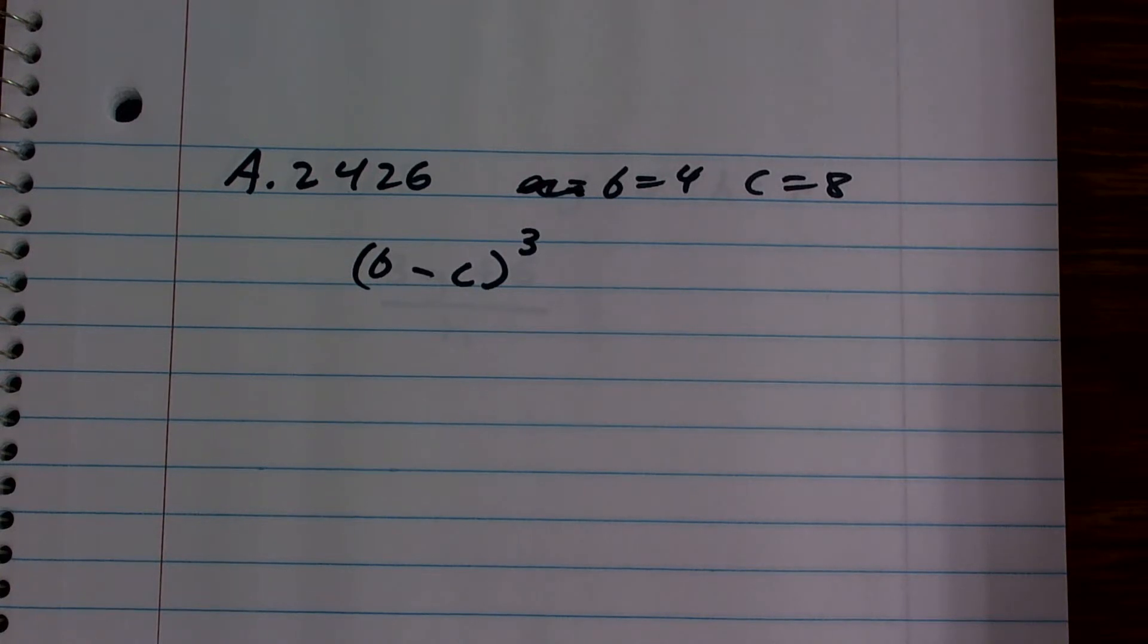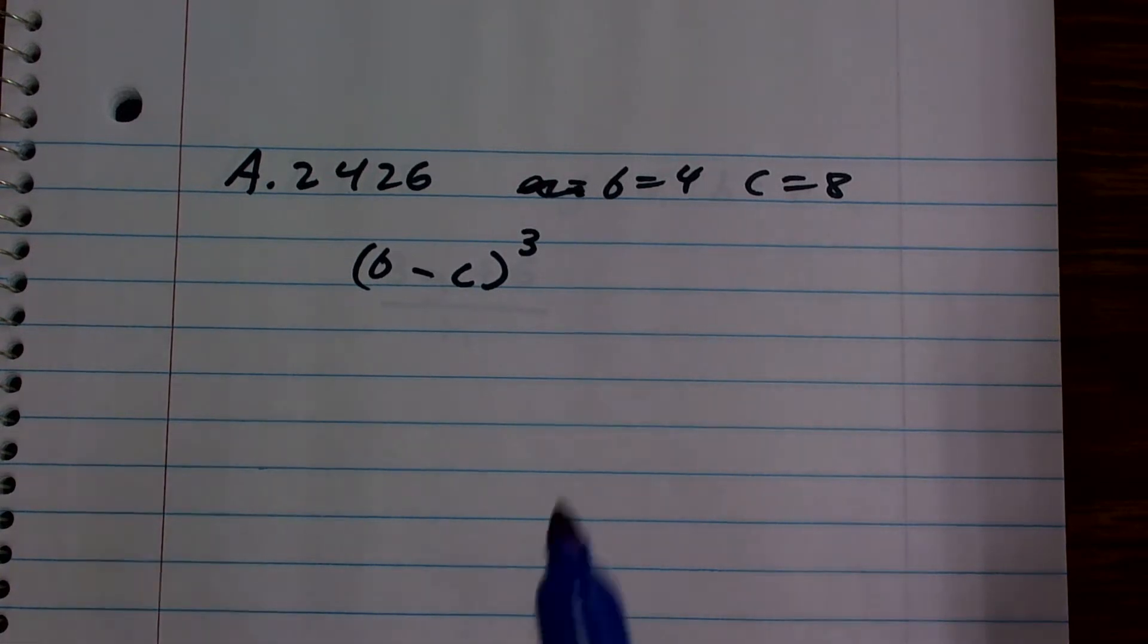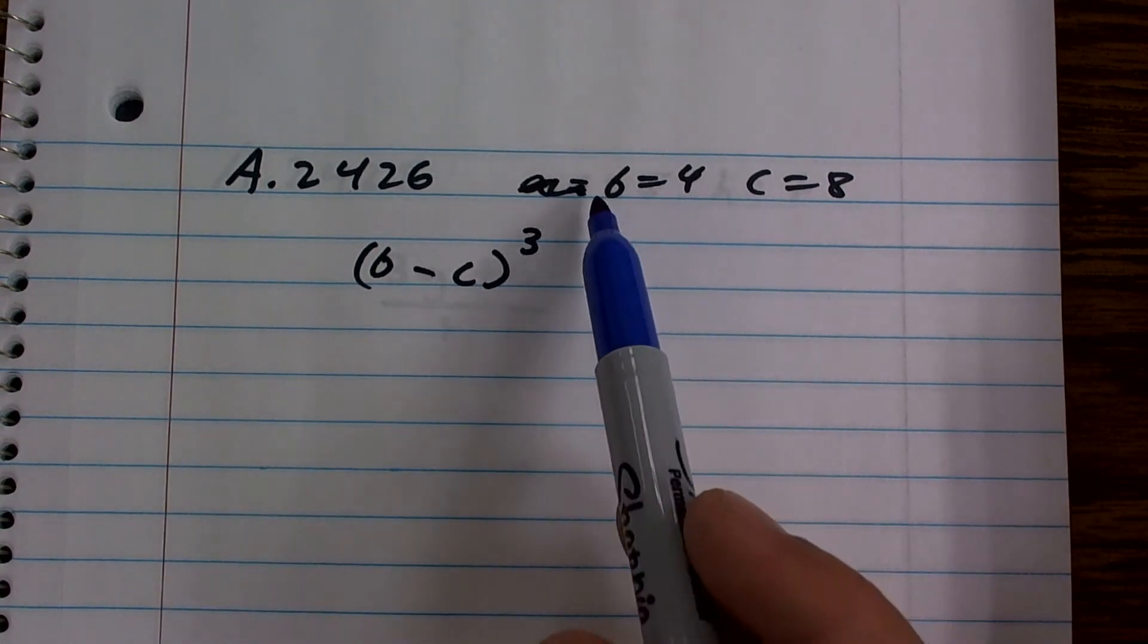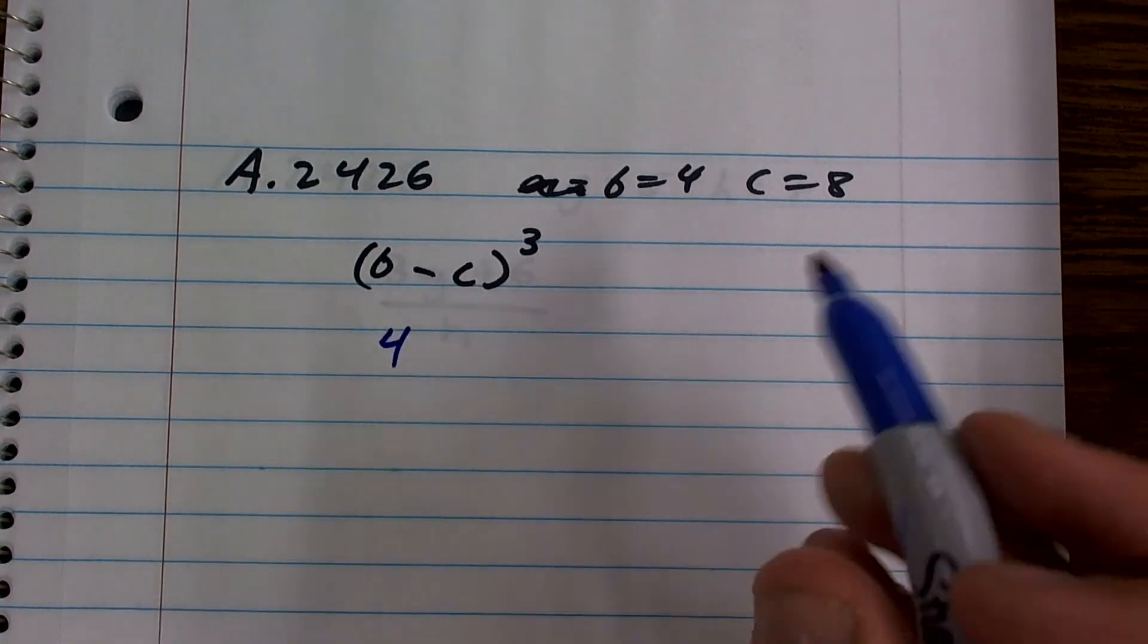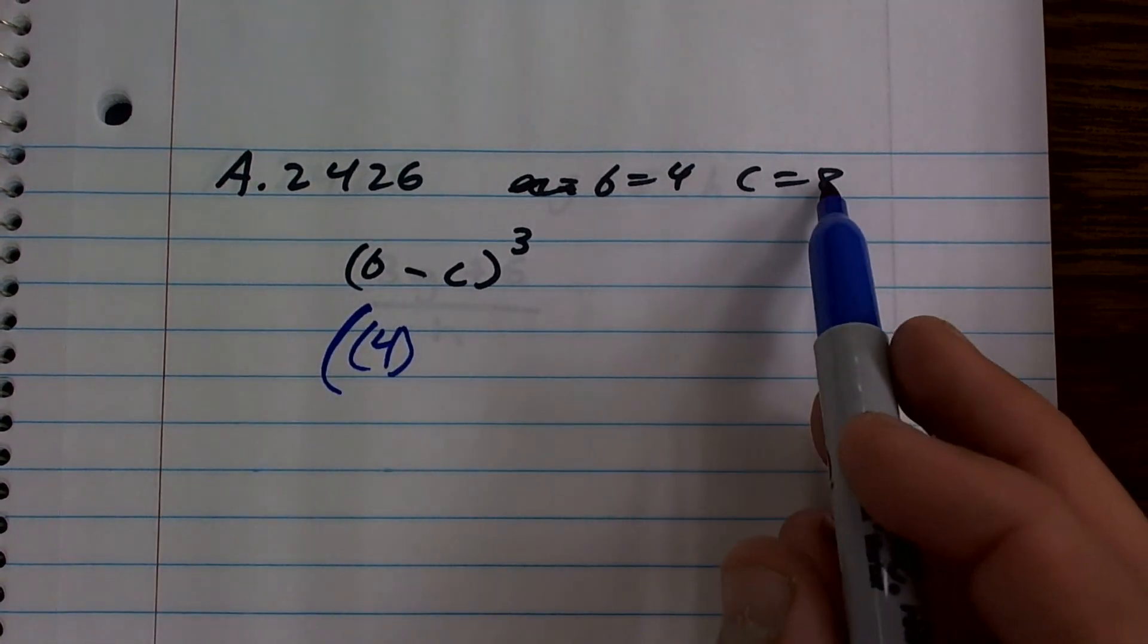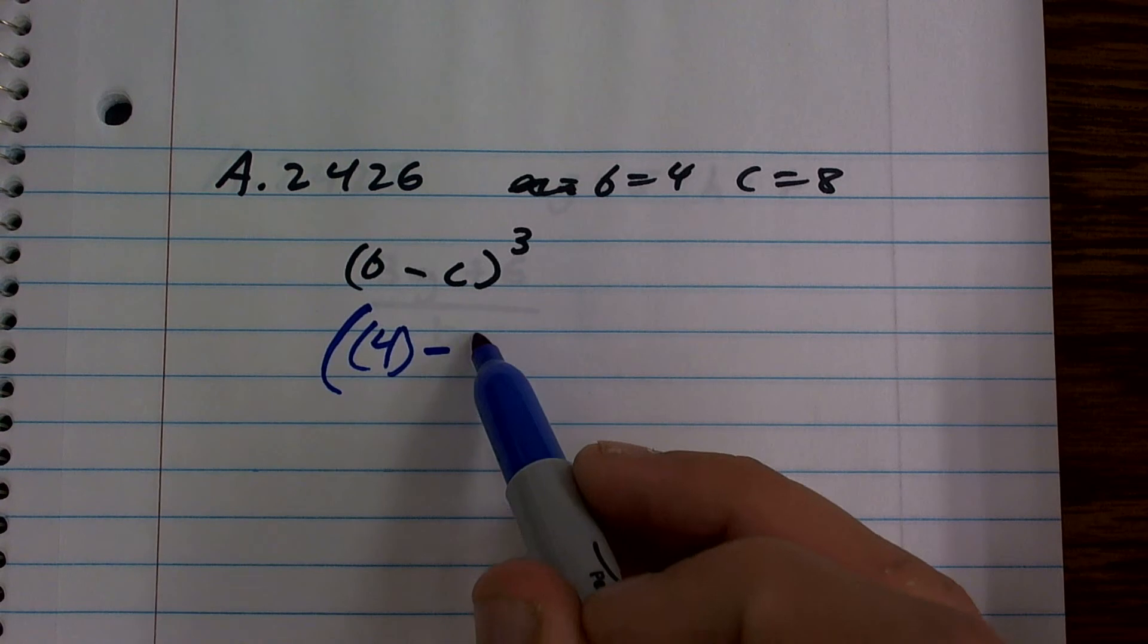Well, all we've got to do, guys, is don't make this worse than it has to be. Just take b, plug that in, or just take 4, which is your value of b, plug that in. Then take, and I'm going to put them in parentheses, take your value of c, which is 8, and plug that in.